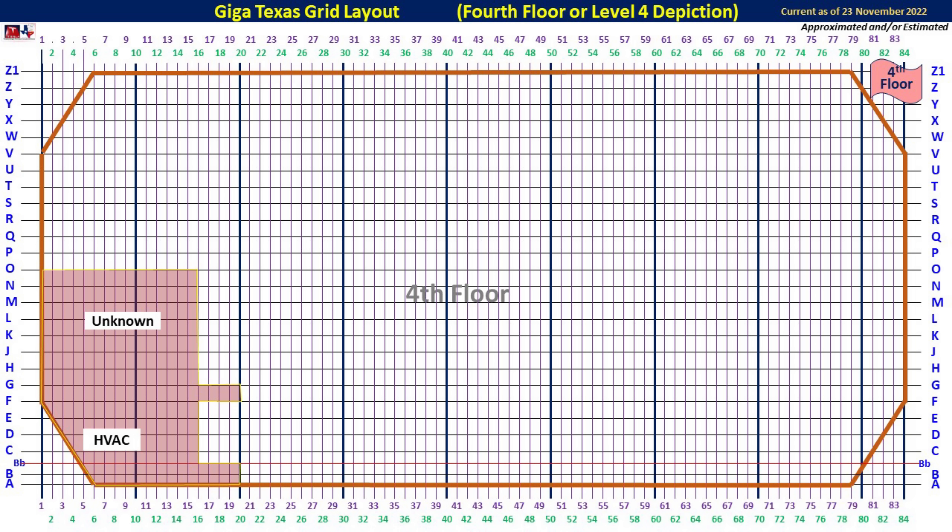The only area of the factory that I'm aware of that has a fourth floor is over the battery cell production location. This is where HVAC components and piping and also an unknown section are located.